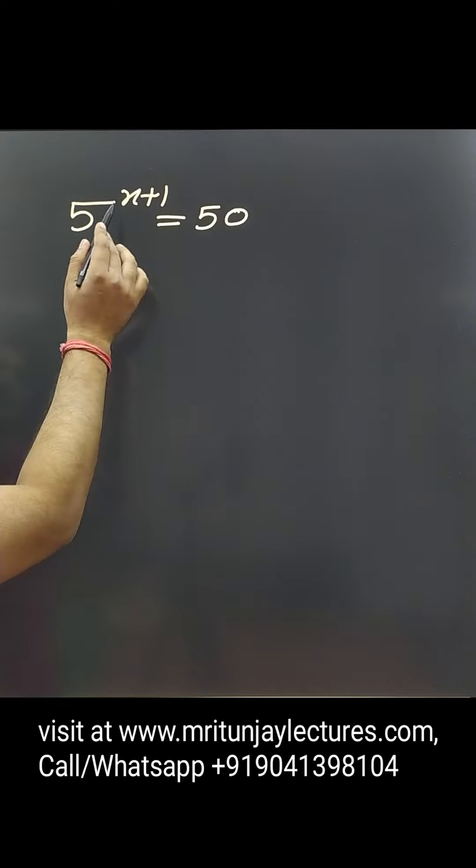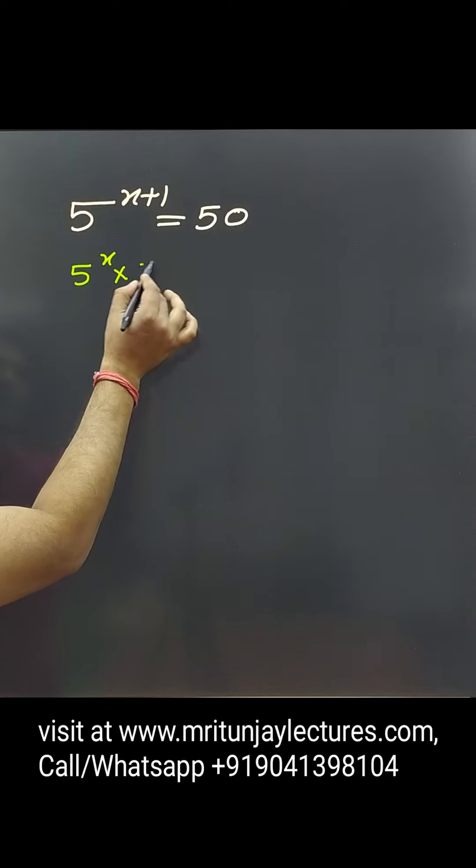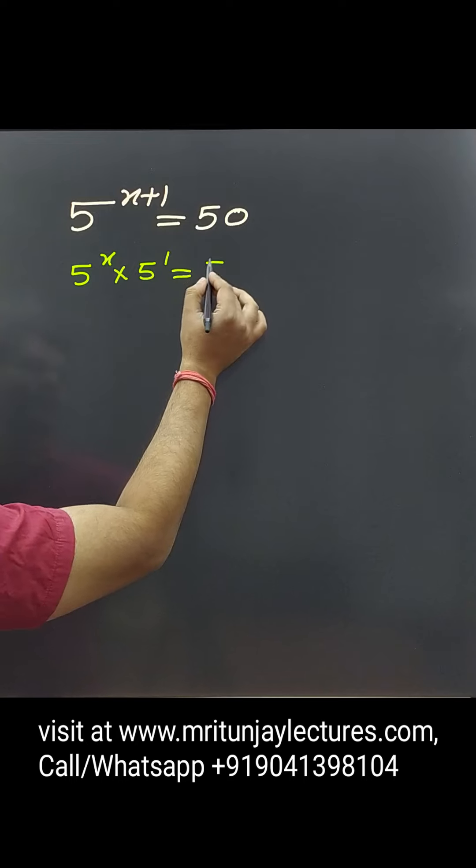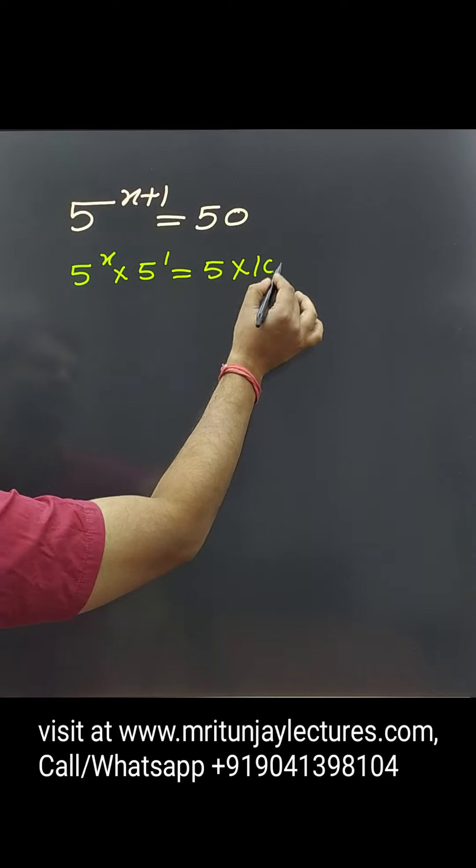Now, question of the day, our motive is x. Here, 5 to power x plus 1, that is 5 to power x into 5 to power 1. This will be equal to 50. 50 is also written as 5 into 10.